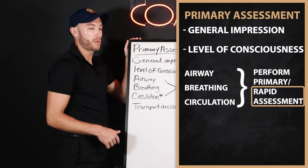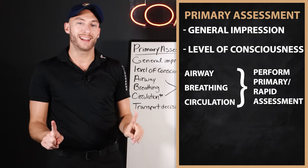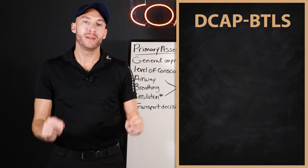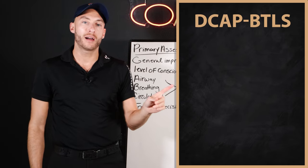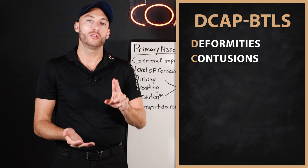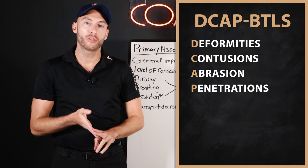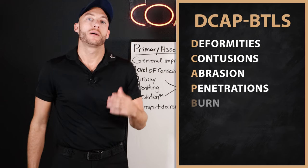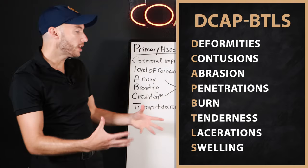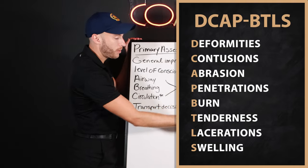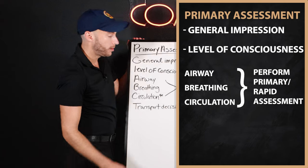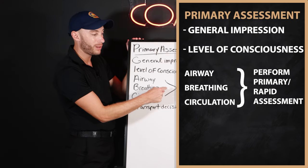For the rapid assessment when talking about trauma, our first mnemonic is DCAP-BTLS. This mnemonic helps you when scanning your patient. You're looking for deformities, contusions, abrasions, punctures — that's DCAP. Then BTLS: burns, tenderness, lacerations, swelling. You're looking for any of that during your physical exam. The key is looking for life threats — if you see a life threat, you have to treat it.